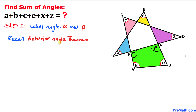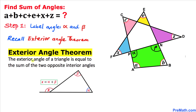Let's recall the exterior angle theorem. The exterior angle of a triangle is equal to the sum of the two opposite interior angles. As you can see in this given figure, x is our exterior angle and that is equal to the sum of these two opposite interior angles alpha and beta.